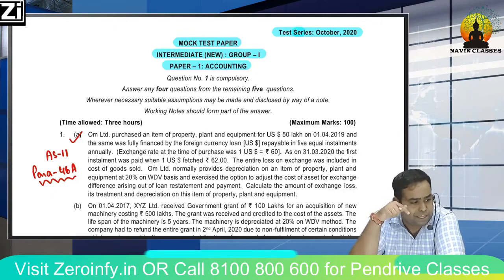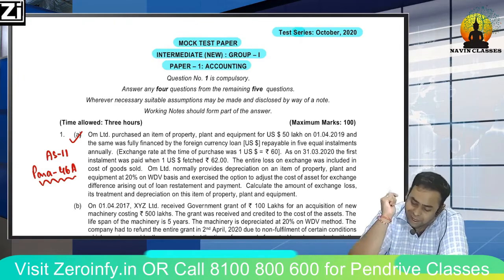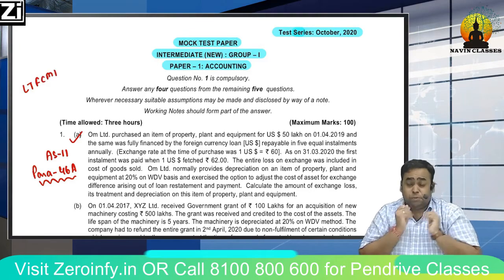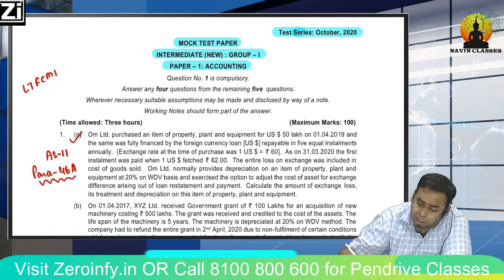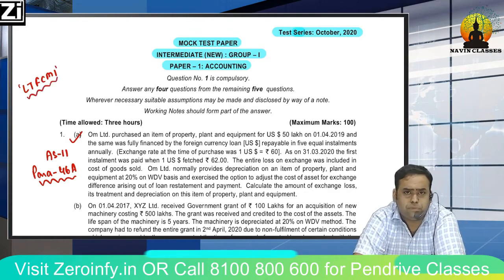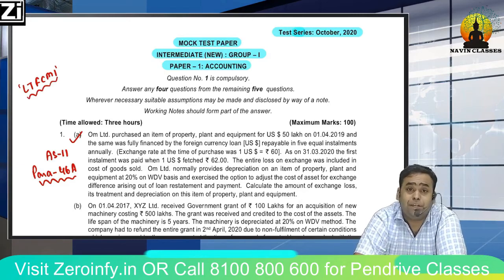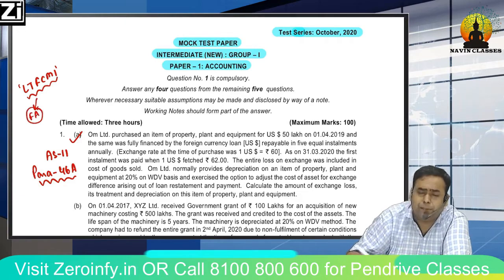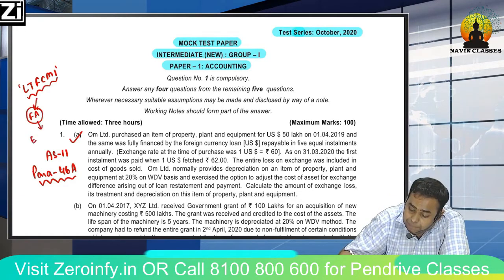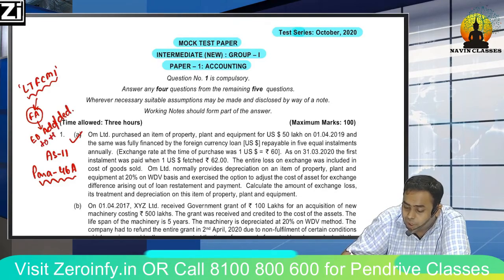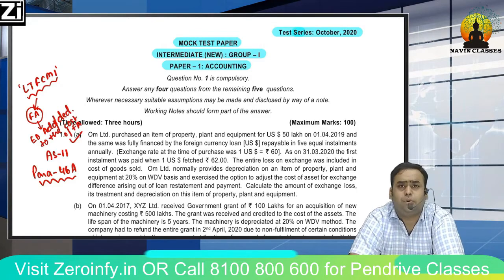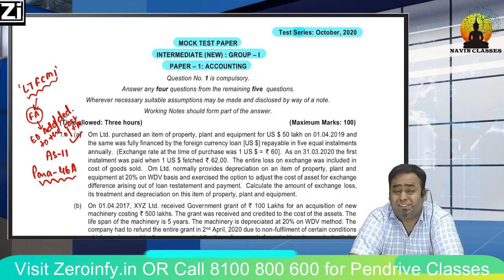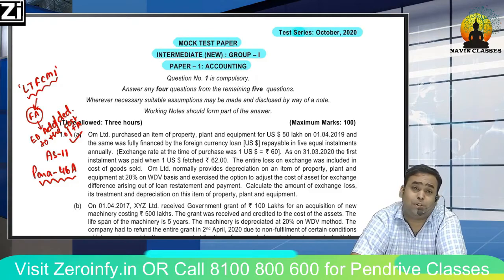But Para 46A gives entities an option. If the foreign currency monetary item is related to the purchase of a depreciable fixed asset, normally it goes to P&L, but the entity can instead capitalize the exchange difference — that is, add it to the fixed asset cost. For a long-term foreign currency loan taken for a fixed asset, the exchange difference can be added to the asset cost.